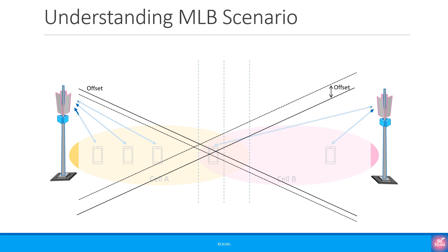There are five different handover parameters that help determine when to hand over the UE from cell A to cell B. These are hysteresis, time to trigger, cell individual offset, and threshold. Some of these parameters are cell specific while others are event specific. If you are familiar with handover procedures, there are certain measurements that are set up. Depending on the load of the cell and what else is going on, some of these values change to ensure more devices get handed over to the cell that is less loaded. We are not going to discuss these here, but there are some good references you can get from the slides.